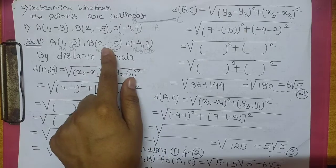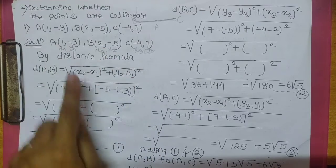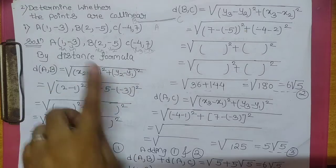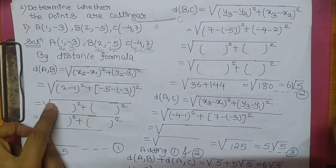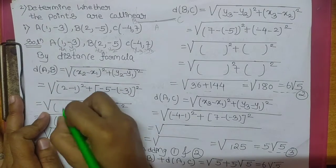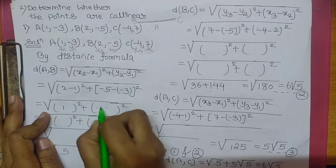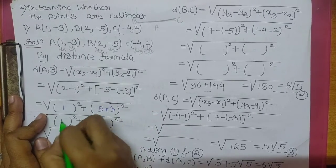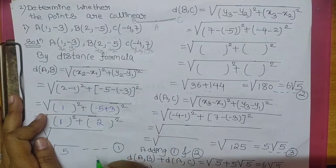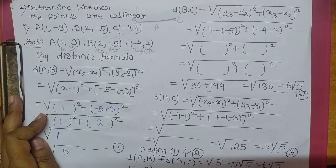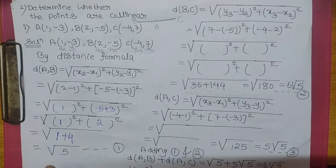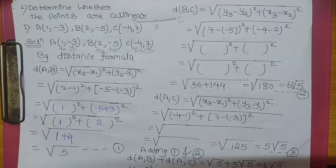x2 aapka hai 2, x1 aapka 1, y2 aapka minus 5, y1 aapka minus 3. Now, 2 minus 1 is 1, minus 5 plus 3 will be minus 2 ka square. 1 ka square is 1, 2 ka square is 4. 1 plus 4 aapka aa gaya square root of 5.